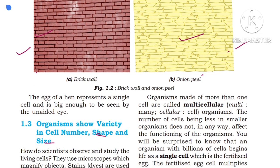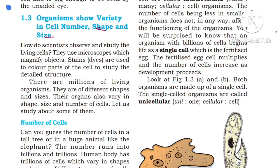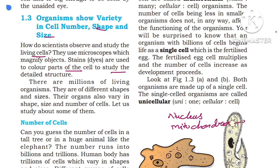Each and every organism has a different number of cells. Scientists observe and study living cells using microscopes which magnify the specimen. Stains or dyes are used to color parts of the cell to study its detailed structure. For example, if you want to observe the nucleus, we use methylene blue; if you want to observe the mitochondria, we use Janus Green B. These stains help identify the structure of those cell organelles.